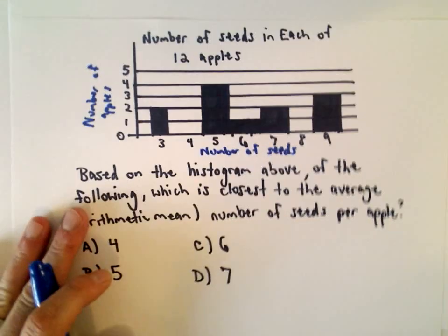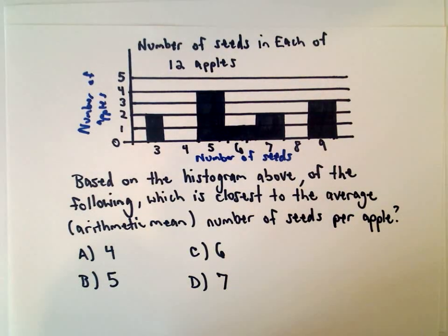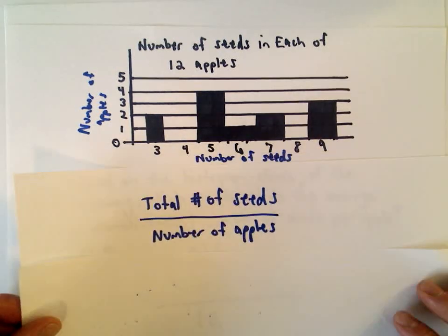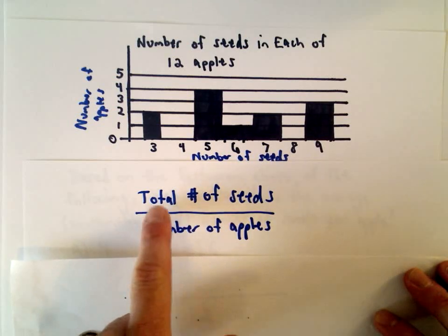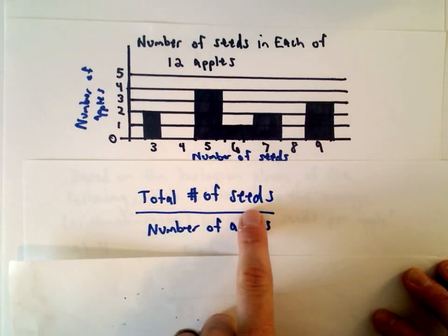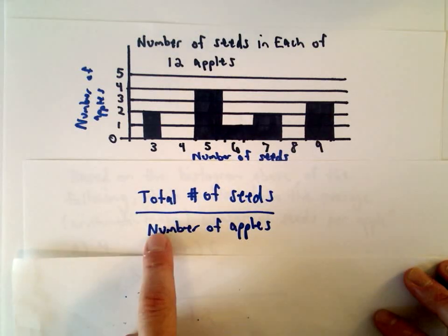So to do this, this question is really about making sense out of a histogram, a bar chart, and also can you calculate an average. I went ahead and wrote down a little bit of information here just to save us a second. To figure out the average, we just need to figure out the total number of seeds and divide that by the number of apples.